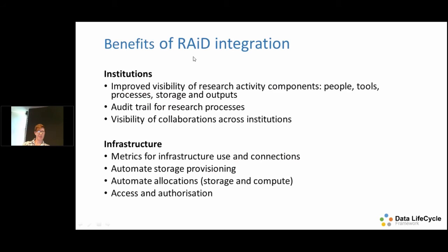For institutions, this gives you improved visibility of research activity components — the people, tools, processes, storage, and outputs involved in each project. It gives you an audit trail for research processes and improves the visibility of collaborations across institutions. For infrastructure, you get metrics for use and connections, you can automate storage provisioning and allocations, storage and compute, and automate access and authorization.